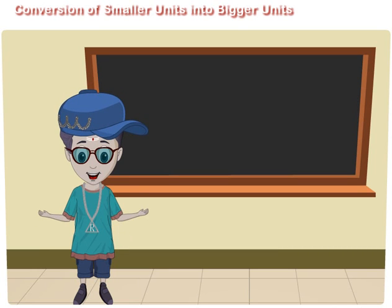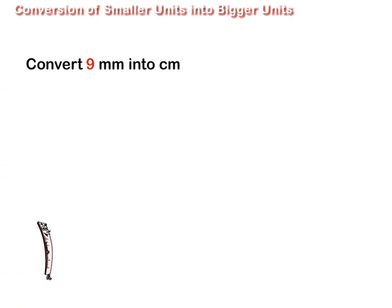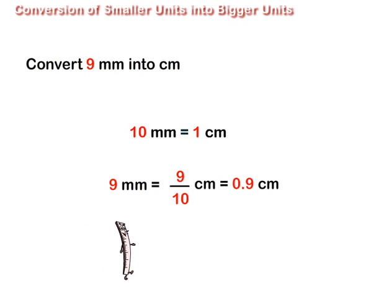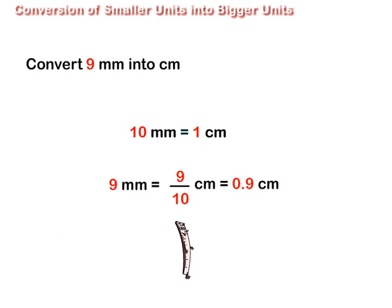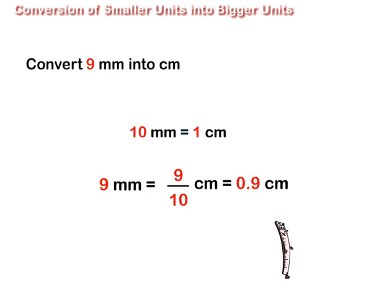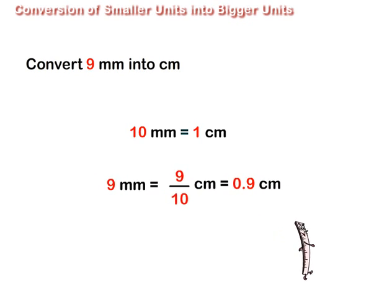Let us solve a few examples. To convert 9 mm into cm, we divide 9 by 10 because 10 mm is equal to 1 cm. Thus, 9 mm is equal to 0.9 cm.